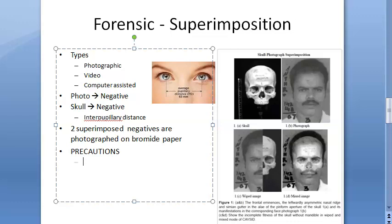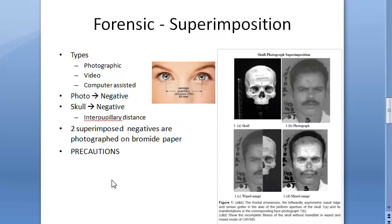Some precautions: a complete skull is required for positive identification. When evaluating anatomical consistency, special attention must be paid to the outline of facial tissue thickness at various anthropometric points. Positional relationships — eyebrow to supra-orbital margin, eye to orbit, nose to nasal aperture, lips to teeth, and ear to external auditory meatus — must align. Coincidence of dentition between the skull and the facial photograph can lead to positive identification.